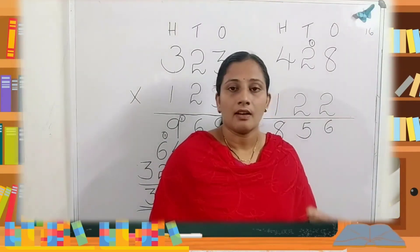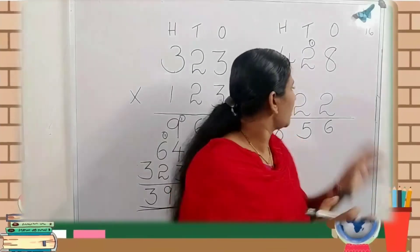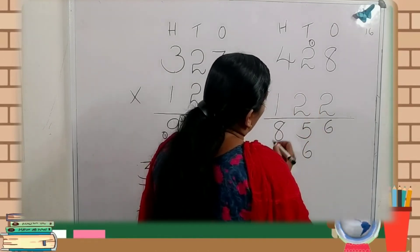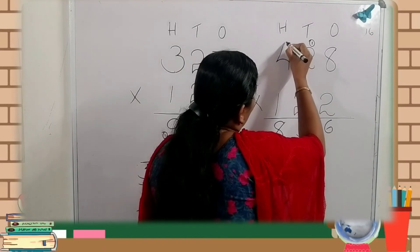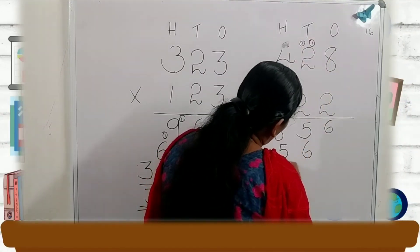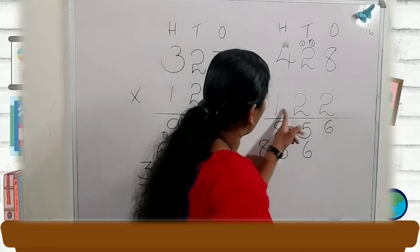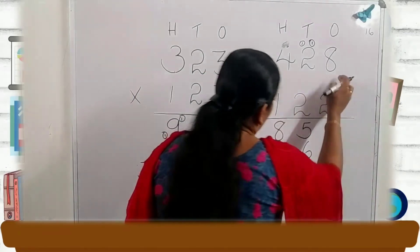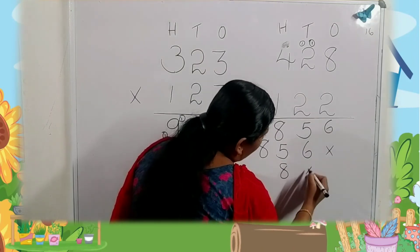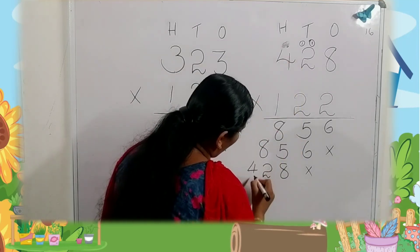Next step: multiply this two by these three digits. First, two into eight — two eights are sixteen, write six here, one carry over. Then two twos are four, plus one is five. Next, four twos are eight. Then the last digit is one. One multiplied by these three digits: one eights are eight — where do we write it? In the hundreds place. There are no numbers before it. One into two is two. One into four is four.